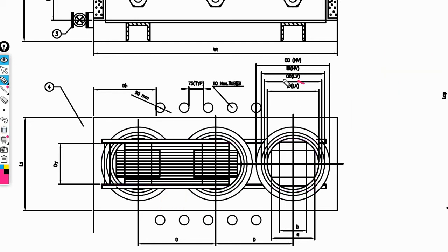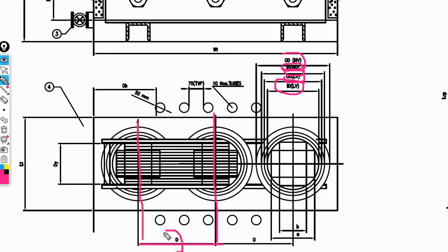Low-voltage winding inner diameter, low-voltage winding outer diameter, high-voltage winding inner diameter, and high-voltage winding outer diameter — these are important points. Also, we need the distance between two adjacent centers, denoted as capital D.